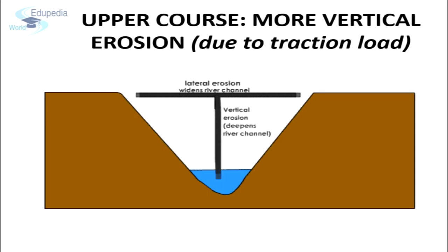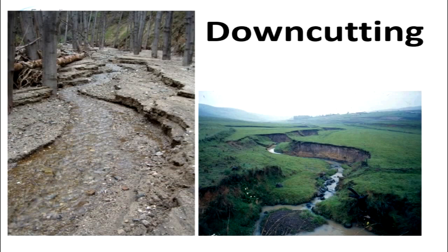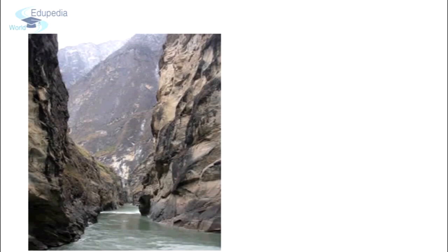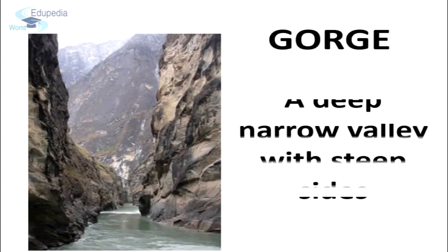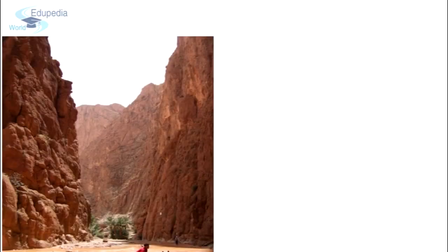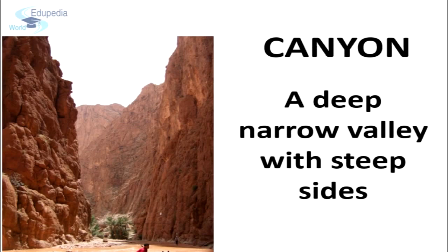In some cases, where the rocks are very resistant, the valley is so narrow and the sides are so steep that gorges are formed. For example, the Indus Gorge in Kashmir. Gorges have a very narrow valley with steep sides. In arid regions where there is little rainfall to widen the valley sides and the river cuts deep into the valley floor, very large valleys are formed called canyons. The Grand Canyon of USA is an example of such large valleys.